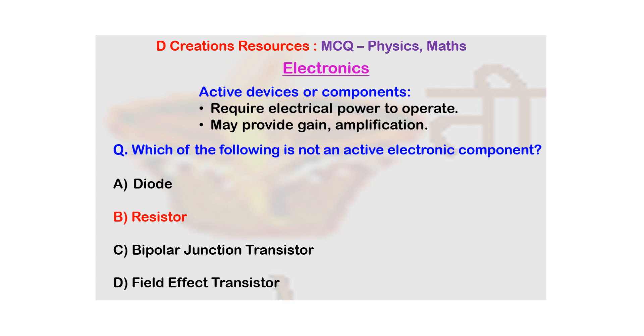In fact, apart from resistor, there are some other components which are not active and the name for the components which are not active is passive. So there are passive components like a resistor, an inductor, a capacitor, in fact even a transformer is also a passive component.